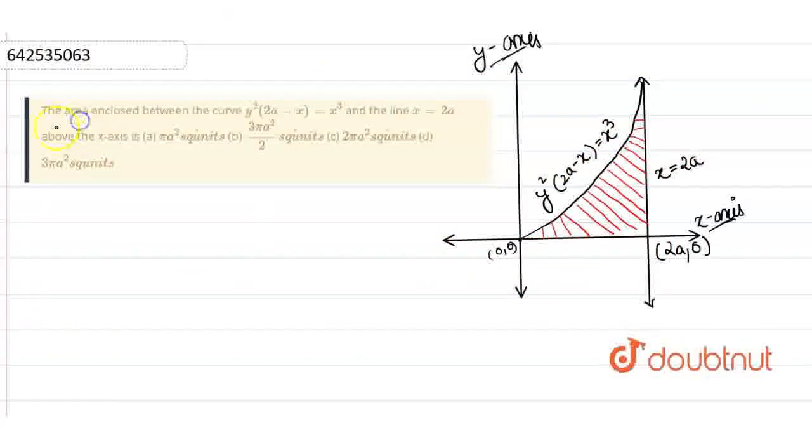The area enclosed between the curve y² = 2ax - x³ and the line x = 2a above the x-axis is: